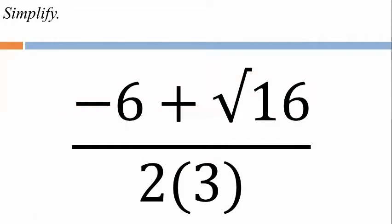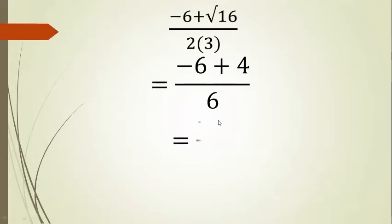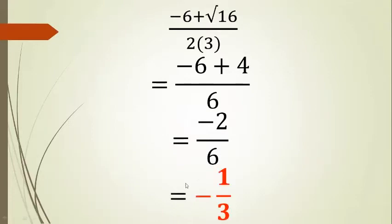Next: (negative 6 plus square root of 16) divided by (2 times 3). The square root of 16 is positive 4, and 2 times 3 is 6. Negative 6 plus 4 is negative 2, divided by 6, giving us negative one-third.